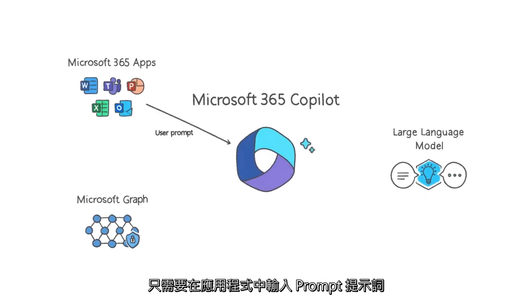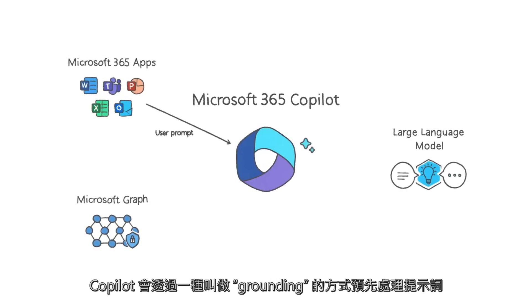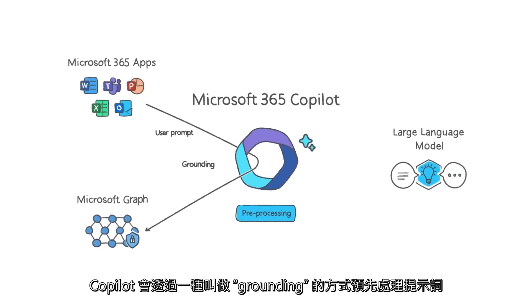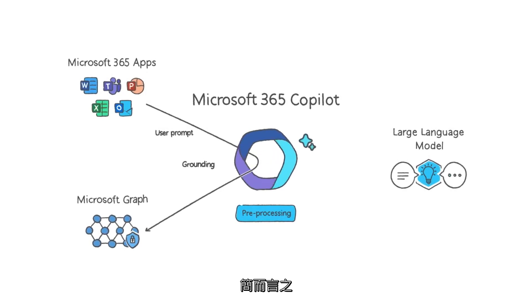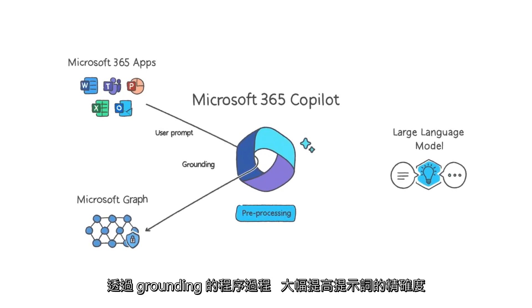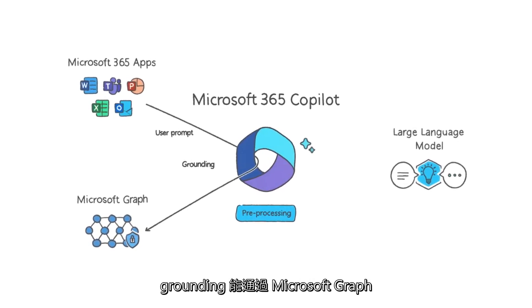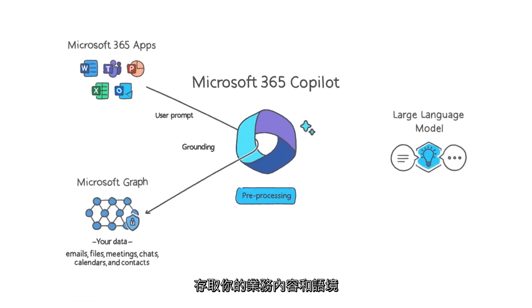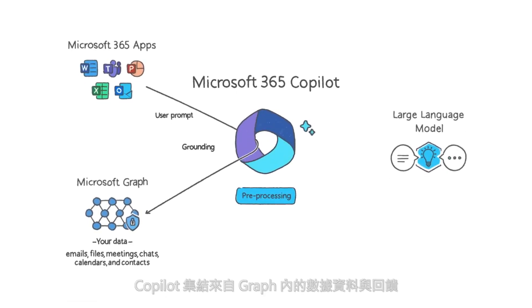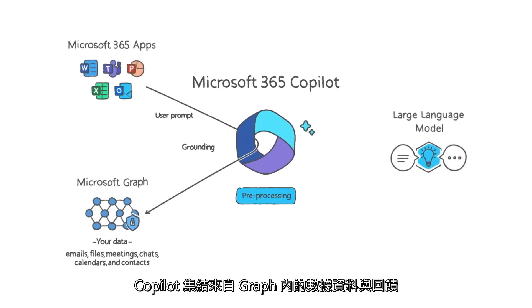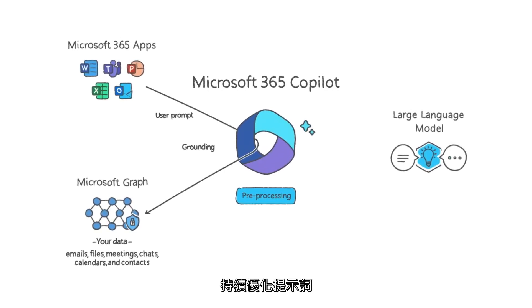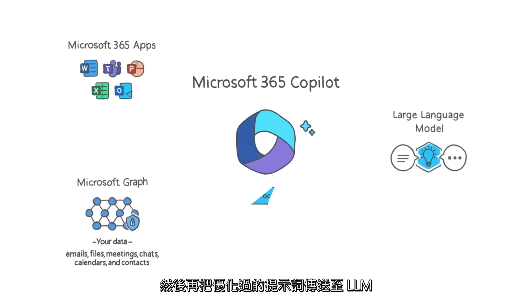It starts with a prompt from you in an app. CoPilot pre-processes the prompt through an approach called grounding. Put simply, grounding improves the quality of the prompt, so you get answers that are relevant and actionable. One of the most important parts of grounding is making a call to the Microsoft Graph to retrieve your business content and context. CoPilot combines this user data from the graph with other inputs to improve the prompt, and then sends that modified prompt to the LLM.